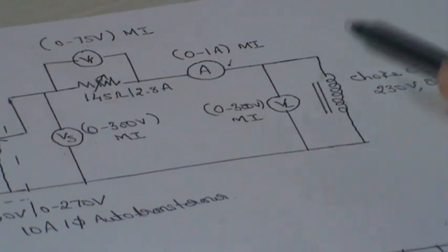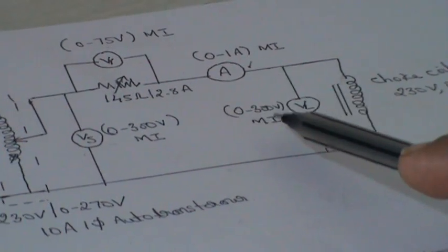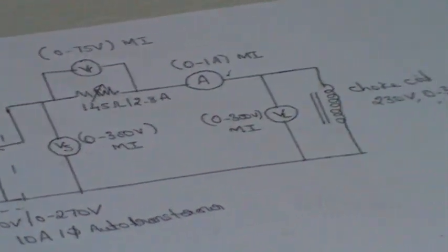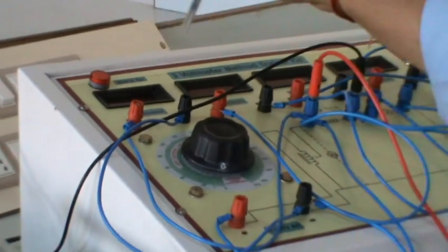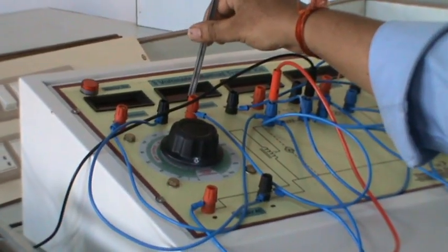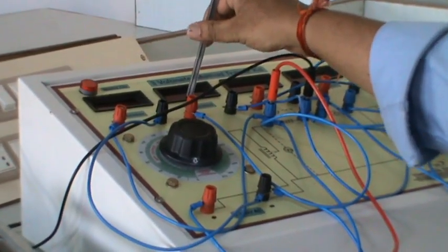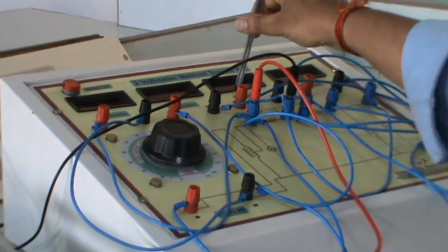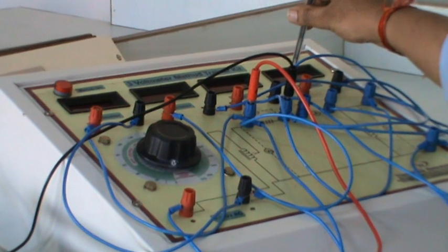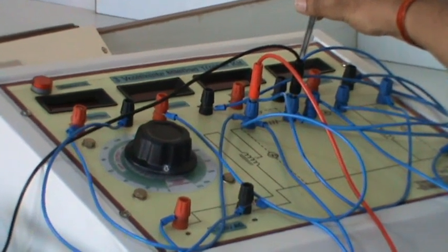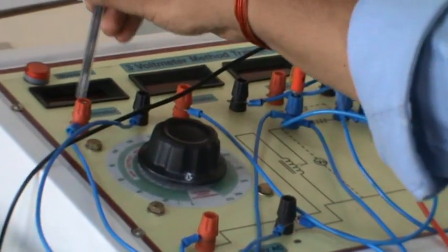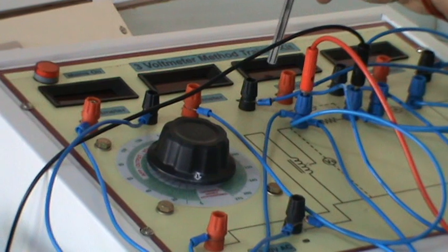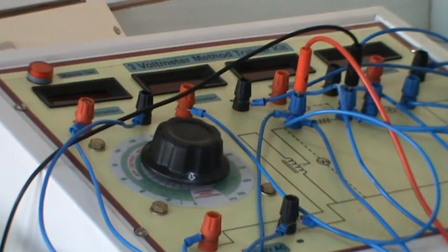Vl — the voltage across the Choke Coil — is 0 to 300 volt, moving iron. In this setup: this will be measuring supply voltage, this will be measuring voltage across resistance, this will be measuring voltage across the Choke Coil, and this will measure the current in the circuit. So, that means: this is Vs, Vr, Vl, and current.